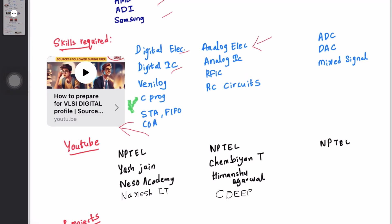Some of the sources I have followed are mentioned here. For digital VLSI profile, I have followed NPTEL. For digital IC, I have followed Professor Janakiraman from IIT Madras, and for Verilog, I followed Professor Indranil Sengupta's video. For studying STA, one can follow Yes Gain YouTube channel and practice problems for written test. And for some parts of COA, I refer to NESO Academy videos on YouTube. For C programming, NESO Academy and Naresh IT YouTube channel were helpful.